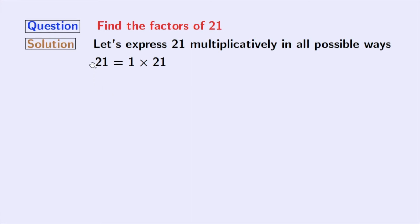Next, number 2 does not divide 21 as this is an odd number. So, we will try for 3 and this gives us 3 times 7 which is equal to 21.